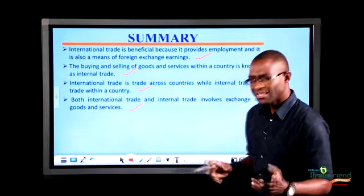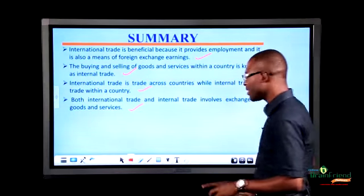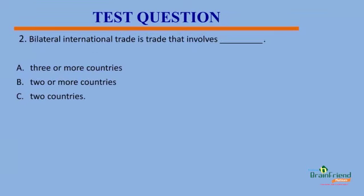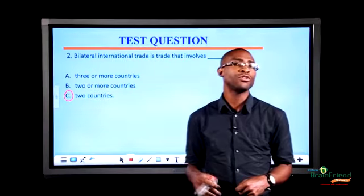Let's test ourselves on how much we have learnt today. Question 1: Dash refers to the exchange of goods, capital, and human resources between two or more countries. Option A: Internal Trade. Option B: International Trade. Option C: European Trade. The correct answer is Option B — International Trade. Question 2: Bilateral international trade is trade that involves dash. A: Three or more countries. B: Two or more countries. Or C: Two countries. The correct answer is Option C — Two countries.